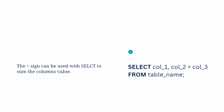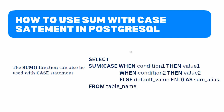Now let's move to the last topic of this tutorial: how to use SUM with a CASE statement in PostgreSQL to sum column values conditionally. You can use the CASE statement with a SUM function to sum values based on certain criteria. Within the SUM function, condition 1, condition 2, and so on are the conditions you want to test, and value 1, value 2, and so on are the values to be summed if the corresponding condition is true. The default value is the value to be summed if none of the conditions are true.